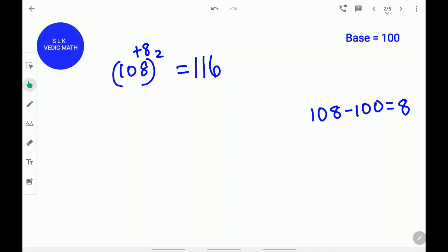Next, find the square of the difference 8. 8 square is 64. Write down the 64. So, the answer for 108 square is 11664.